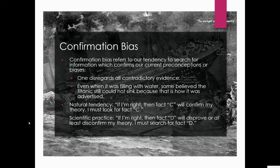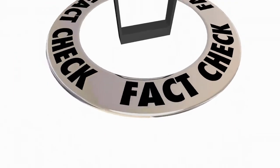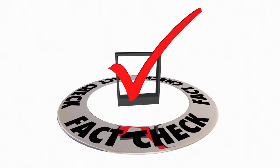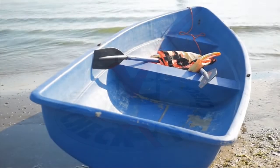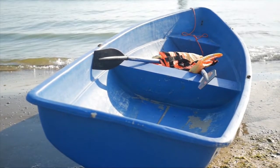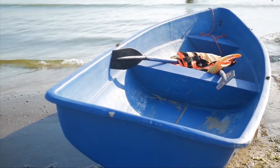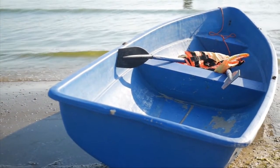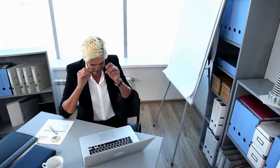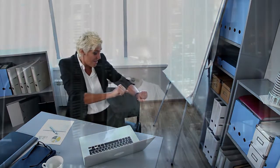Confirmation bias refers to our tendency to search for information which confirms our current preconceptions or biases — one disregards all contradictory evidence no matter what. Even when the Titanic was filling with water, some people said 'it's not sinking, this is an unsinkable ship,' while others were saying 'get me on a lifeboat, it's going down.' Natural tendency under confirmation bias: if I'm right, then fact C will confirm my theory — I must look for fact C. Tycho Brahe kept looking for fact C and never found it.